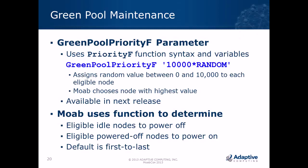If you don't specify the priority F function, Moab's default behavior is to go from the first node to the last. We had customers who experienced problems because things always started at the beginning with no way to specify priority — so we added this for control. The random value example was requested by an HPC administrator who wanted all nodes to cycle through a power cycle over time, not just the same ones repeatedly.